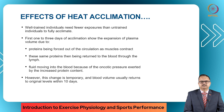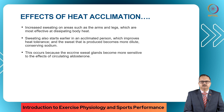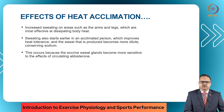This plasma volume change is temporary, and blood volume usually returns to original levels within the next 10 days. Increased sweating is seen on areas such as the arms and legs, which are most effective at dissipating body heat. Sweating also starts earlier in an acclimated person, improving heat tolerance, but the sweat produced is more dilute, conserving sodium. This occurs because the eccrine sweat glands become more sensitive to the effects of circulating aldosterone.